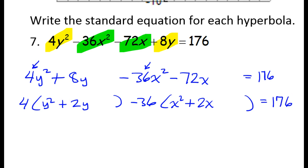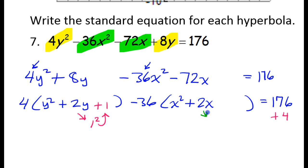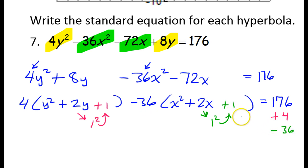Now it's time to complete the square. Half the middle squared — half of 2 is 1, and 1 squared is still 1, so I'm going to put a plus 1 here. Be careful: I'm not going to put a plus 1 on the other side to balance this out, because of the 4 that we pulled out. This is really 4 times 1, so I need to put plus 4 on the right-hand side. Similarly, half of this is 1, and 1 squared is 1, but negative 36 times 1 is what I really have, so I'm going to put negative 36 on the right-hand side to balance out that change.